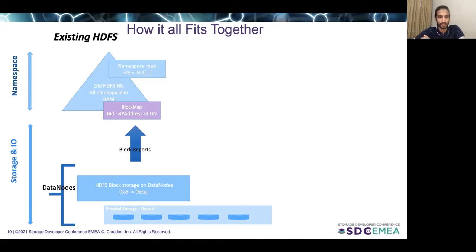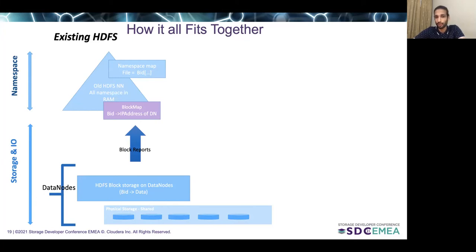The data layer of HDFS comprises data nodes. A data node would have multiple disks, and every disk can be seen as a collection of blocks. The blocks hold the data for the files in the HDFS cluster. Periodically, data nodes send block reports — a list of blocks which the data node contains — and the name node processes these block reports. In case it finds missing blocks, or if a disk or data node has failed, it will schedule replications for the missing blocks.